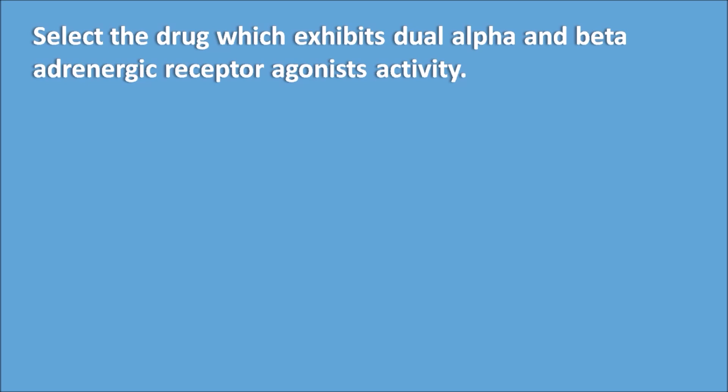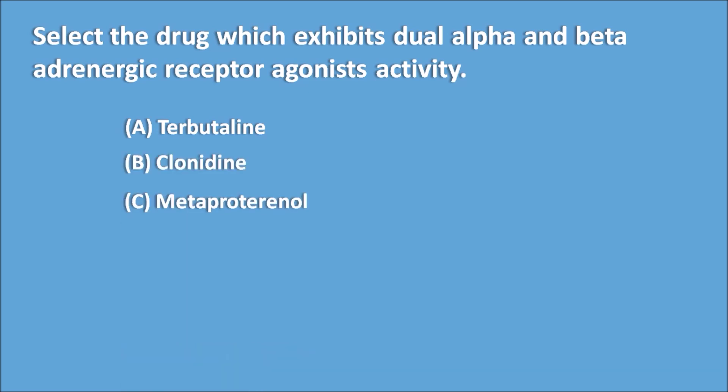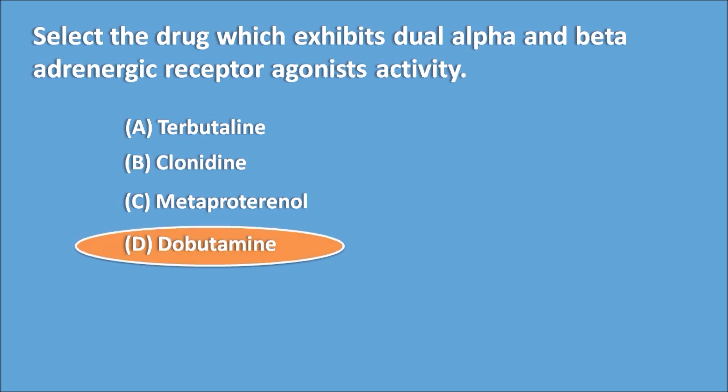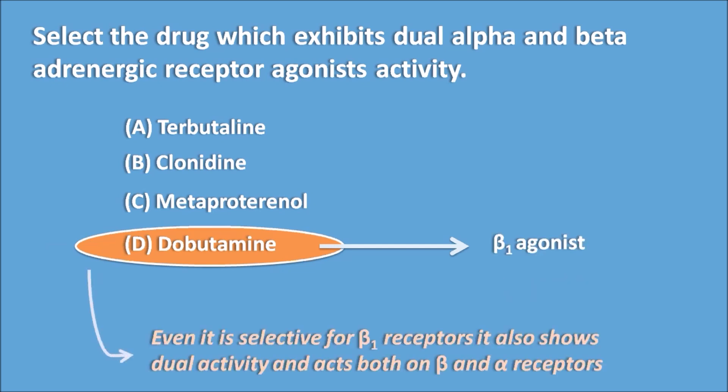Select the drug which exhibits dual alpha and beta adrenoceptor agonist activity: A: Terbutaline, B: Clonidine, C: Metaproterenol, D: Dobutamine. You need to identify which category each drug belongs to and on which receptor it acts. Dobutamine has dual activity on both alpha and beta receptors. Although dobutamine is more selective for beta-1 receptors and is called a beta-1 agonist, it also shows activity on alpha receptors. So D, dobutamine, is the answer.